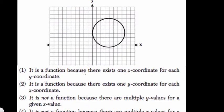So the first one says, it is a function because there exists one x-coordinate for each y-coordinate. Well, it's not a function, in fact, because if you were to draw a vertical line, let's say here, right? Well, here, let's say this point is 1, 2, 3, 4, and then, I don't know, negative 1, right?